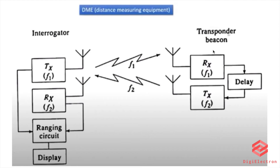If we receive the signal frequency back, we will receive the signal. There will be a delay in the transmitter section when we receive the signal. This is because the signal uses two frequencies.